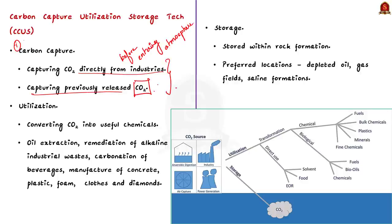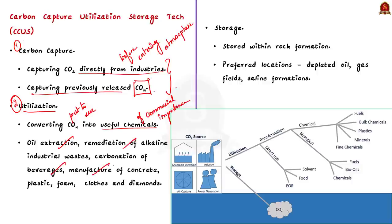The next component is utilization. In this process, the captured carbon dioxide is put to good use — it involves converting CO₂ into useful chemicals of commercial importance. Currently, carbon dioxide is used in oil extraction, remediation of alkaline industrial wastes, carbonation of beverages, manufacture of concrete, plastic, foam, clothes and even diamonds.